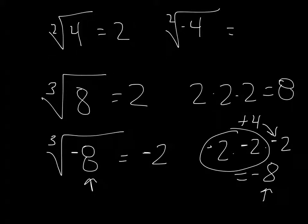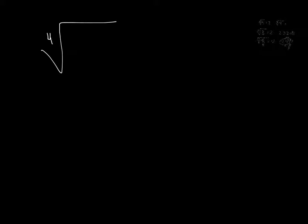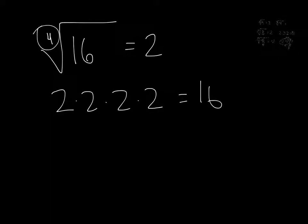Let's extend this to the fourth root. The fourth root of 16 is 2 because 2 times 2 times 2 times 2 equals 16. This index tells you how many times the number multiplies itself to get the radicand. You can't have a negative under an even-index root without imaginary numbers, because two negatives multiply to a positive.